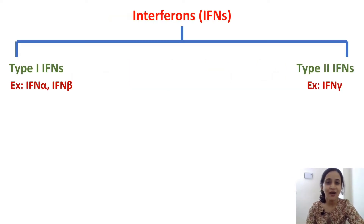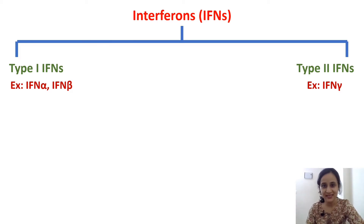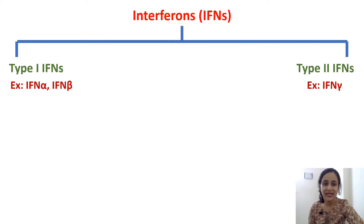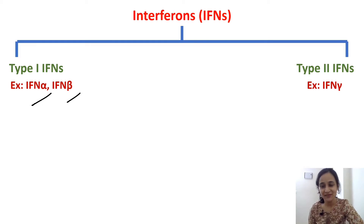So now, interferons are of two types: Type 1 interferon and Type 2 interferon. Type 1 interferon includes interferon alpha and interferon beta, whereas Type 2 interferon includes interferon gamma.